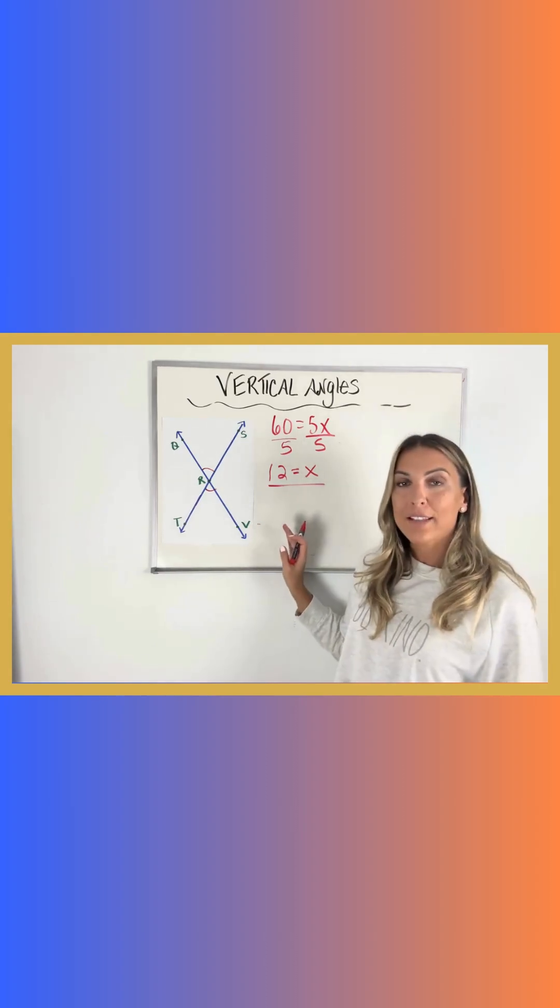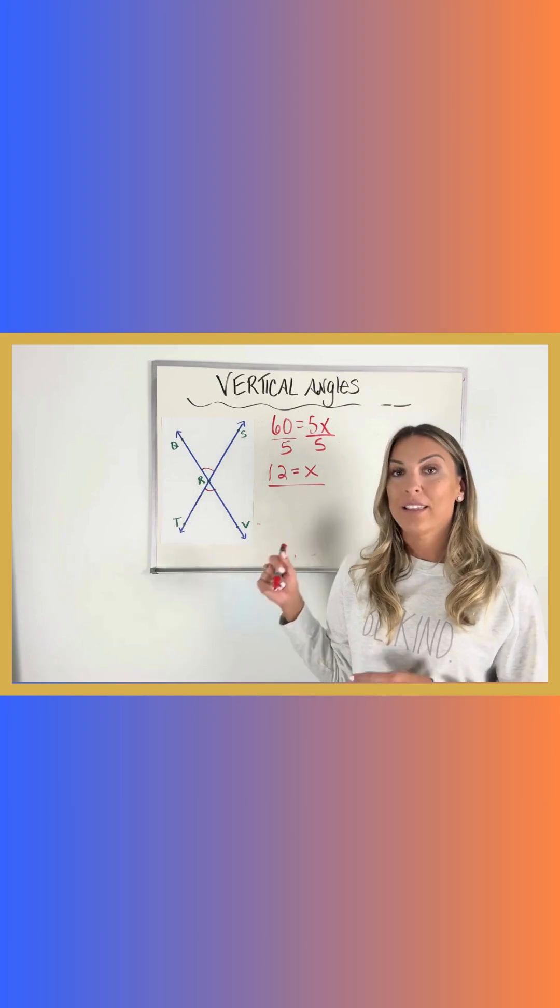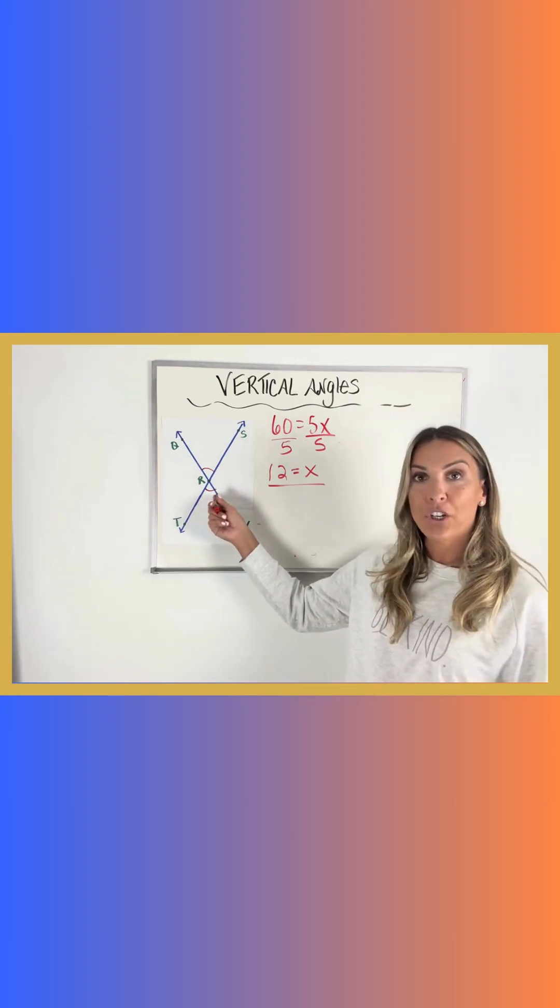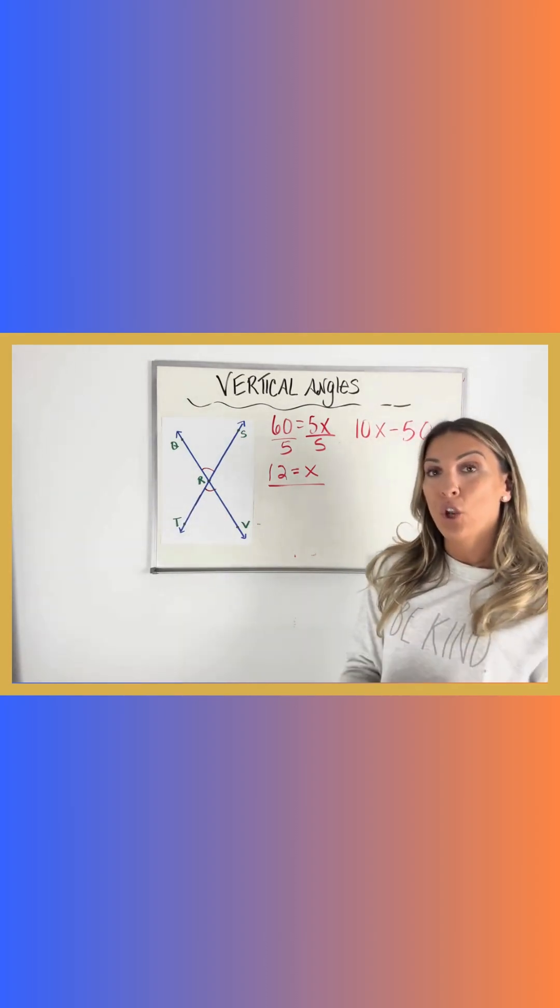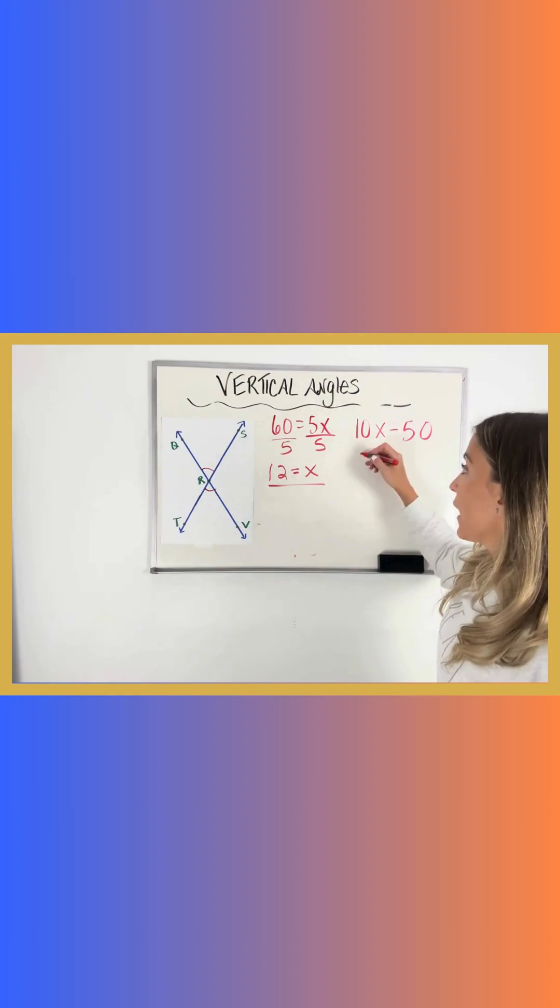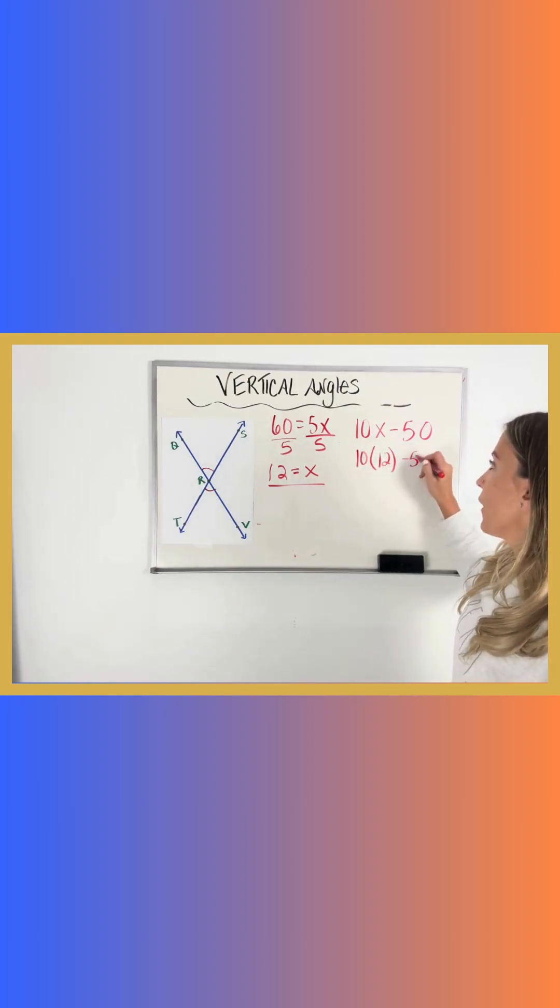But in this particular problem, that doesn't mean I'm done because this problem didn't ask me for x. This problem asked me to find the measure of this angle right here. So that angle is represented by 10x minus 50. So now that I know the value of x, I can replace x with 12 and then evaluate this expression.